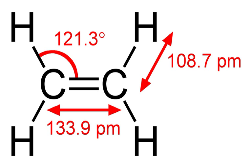Ethylene is a ligand in organometallic chemistry. One of the first organometallic compounds, Zeise's salt, is a complex of ethylene. Useful reagents containing ethylene include Pt(PPh3)2(C2H4) and Rh2Cl2(C2H4)4. The Rh-catalyzed hydroformylation of ethylene is conducted on industrial scale to provide propionaldehyde.